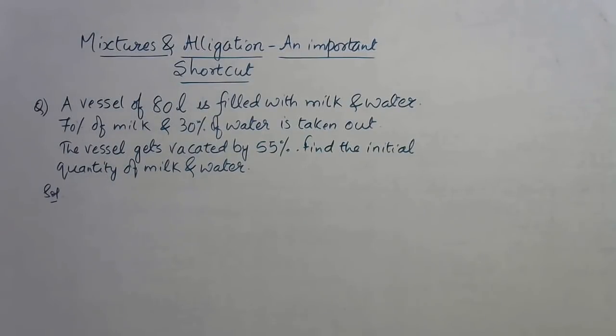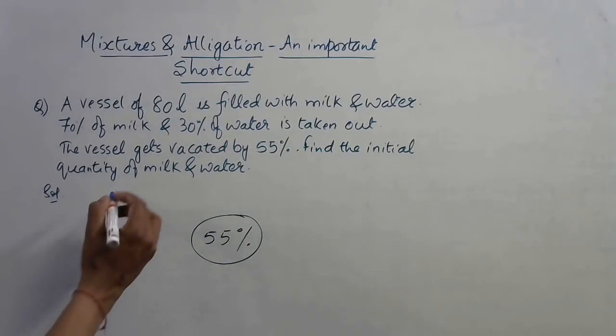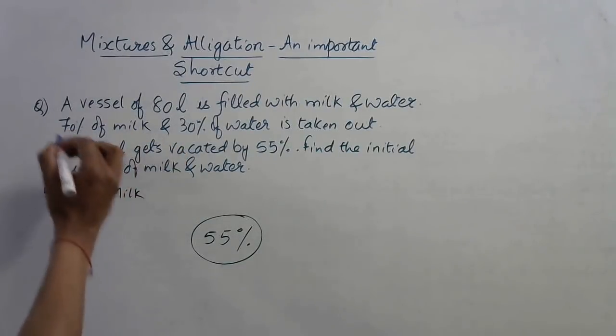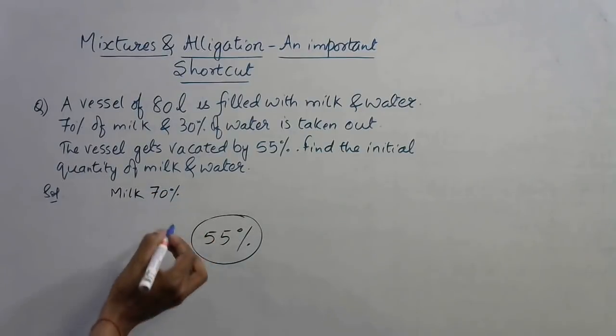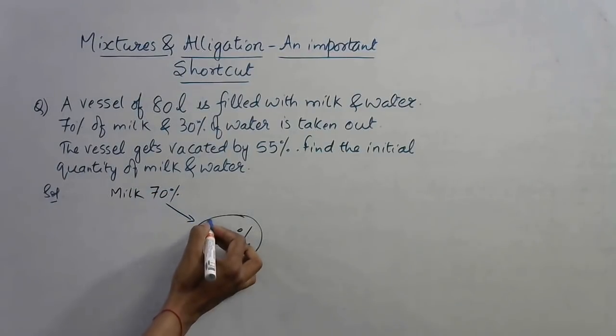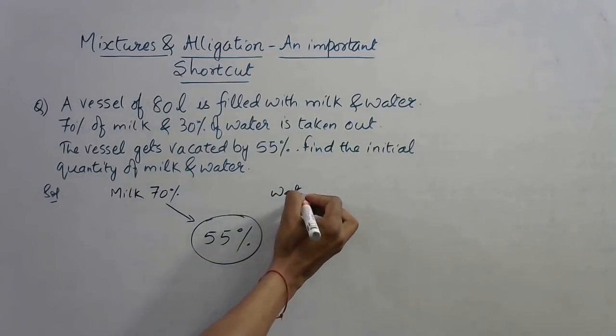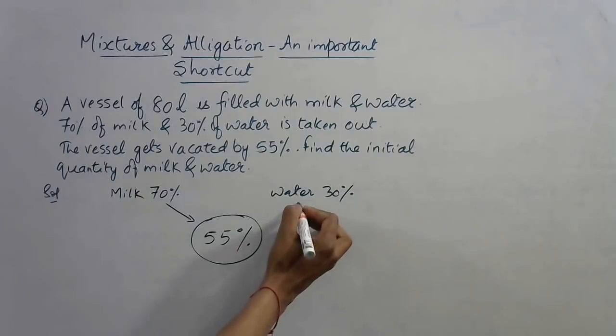Here we have 55% which is vacated, so we will write this in the center: 55%. On one side we have the larger, that is milk, which is 70% of milk taken out, and this is leading to 55% of empty space. On the other hand, we have water, which is 30% vacated or taken out, to yield 55% empty space.